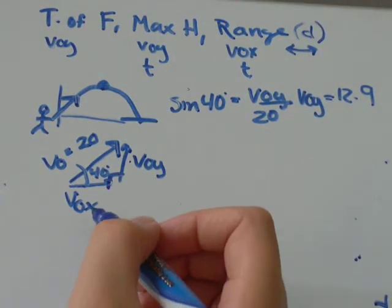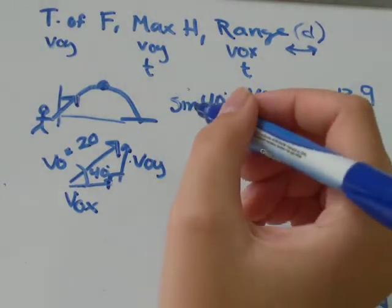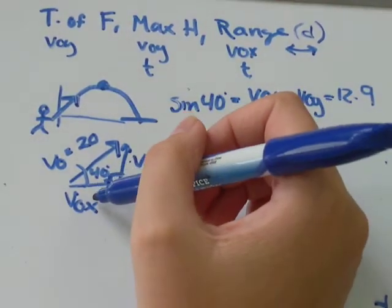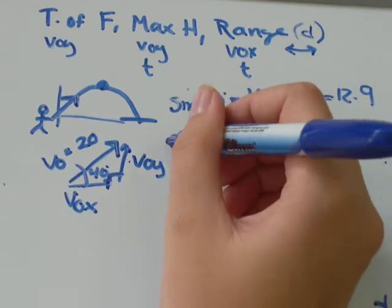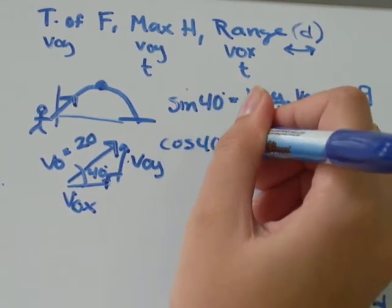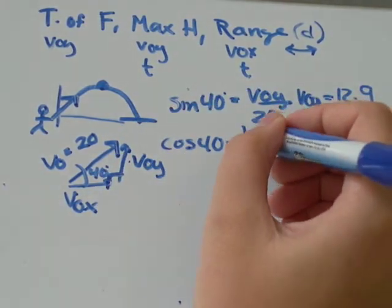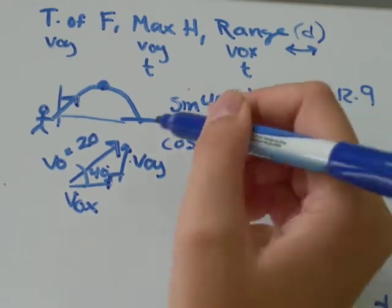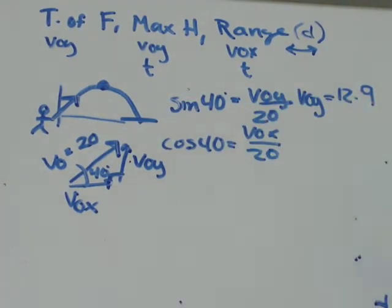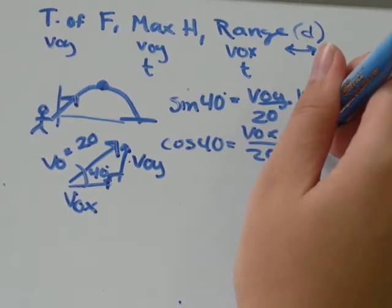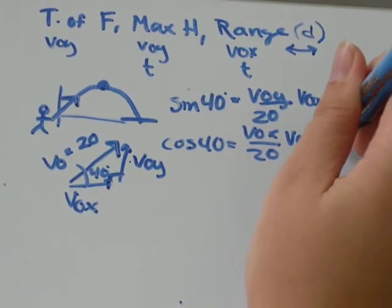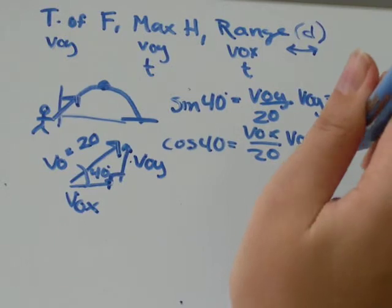I'll do the same thing for VOX. Instead of using sine, I'll use cosine, because this is the adjacent and hypotenuse sides I'm using. So, cosine of 40 is equal to adjacent VOX over hypotenuse, which is 20. I'll calculate cos 40, and I get that's equal to 0.766, multiply by 20, and I get VOX equals 15.3.